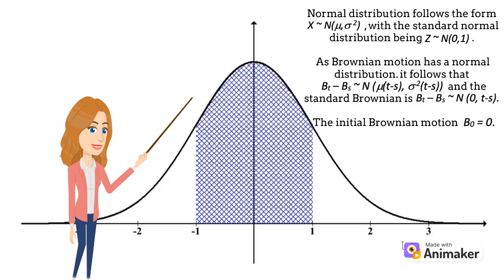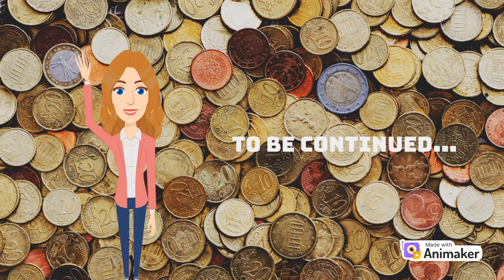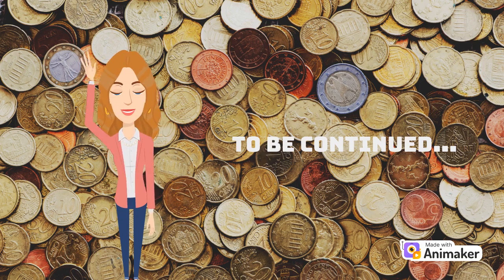As Brownian motion has a normal distribution, b(t) minus b(s) can be distributed as shown, and the standard Brownian motion has mean zero and a variance of t minus s. The initial Brownian motion, b(0), is zero. In the next video, we will look at explaining these fluctuations in price in further detail, considering the model of random walk.